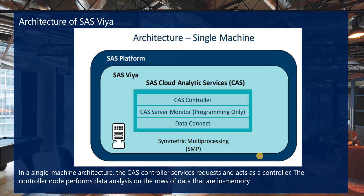In the single machine architecture, the cache controller services requests and acts as a controller. The controller node performs data analysis on rows of data in memory. We have a single cache controller here with no backup controller — unlike the distributed architecture which has a backup. This is called SMP — symmetric multi-processing.